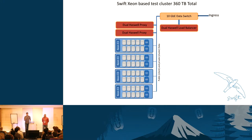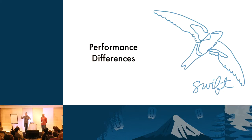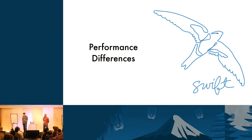We also had a smaller cluster in our lab at SwiftStack, which is a little more network constrained — it merely had 10 gigabit networking. We wanted to cover two things: one is the holistic system performance differences, and the other is the end-to-end sort of thing — what does it mean for Swift as seen by an end user?